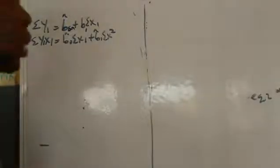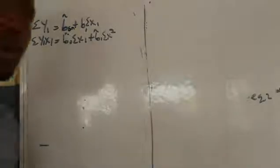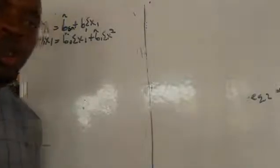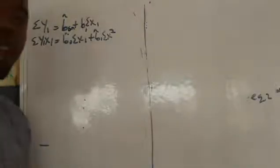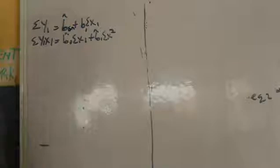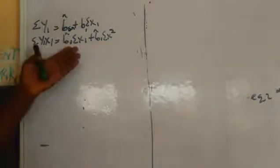In this video, we are going to be looking at how we can get least-square estimates from the normal equation. In our previous video, we have derived the normal equation. This is what we have here. So we want to get least-square estimates from this normal equation.